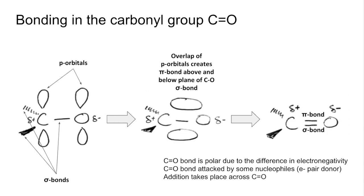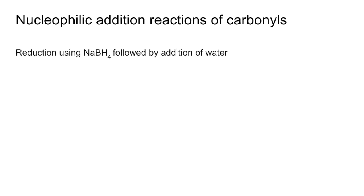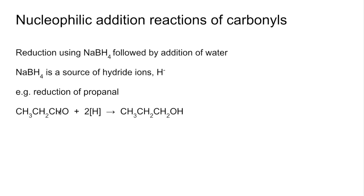The reaction we're going to look at now is the nucleophilic addition reactions of carbonyl compounds. The first one is the reduction reaction using NaBH₄ followed by the addition of water. NaBH₄ is a source of H⁻ ions, or hydride ions. For the reduction of propanal, we use two moles of reducing agent and essentially put one H on each side of the oxygen, giving the CH₂OH group — turning the aldehyde into a primary alcohol.